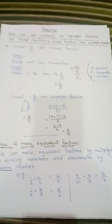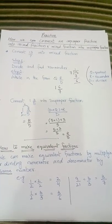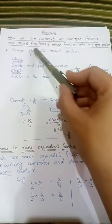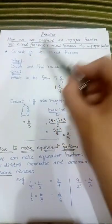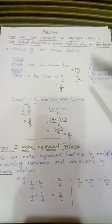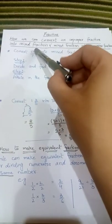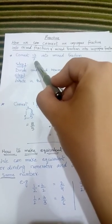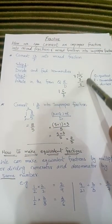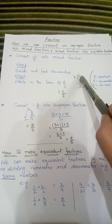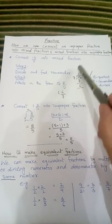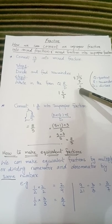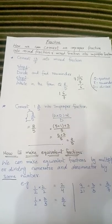The very first step is to divide and find the remainder. We have to divide this fraction and find out the remainder. The numerator is going to be the dividend and the denominator is going to be the divisor. So we divide: 13 by 7 — 1 multiplied by 7 is 7, and the remainder is 6.